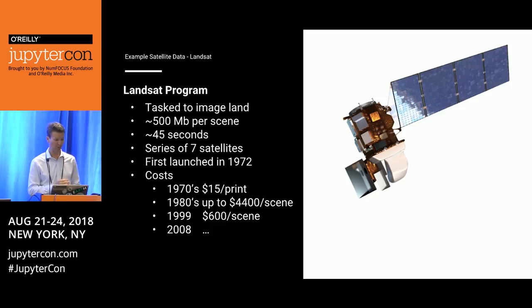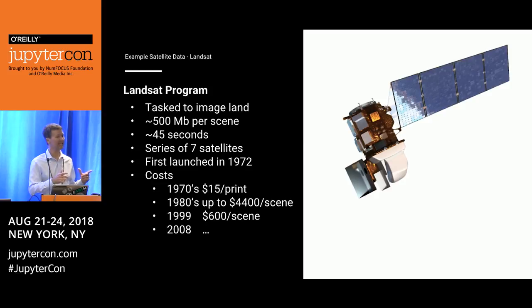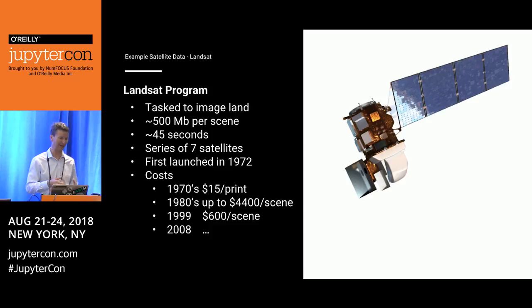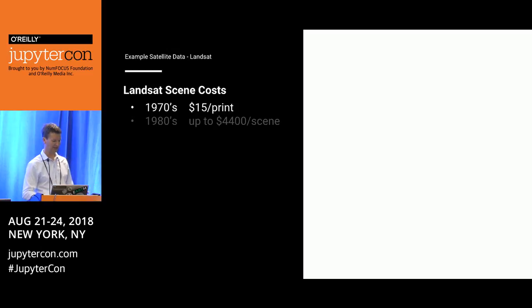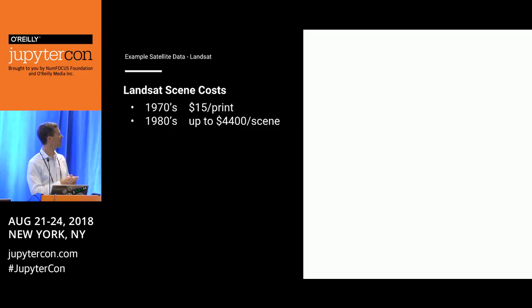A little more about the Landsat program. These satellites — there's been a series of seven of them, occasionally two flying at the same time. They take about 500 megabytes per scene over land, and that happens about every 45 seconds. You think back that this has been happening for 40 years, so it gives you a scale of the amount of data being generated. It started off at $15 for a hard copy, then moved to commercial sales at $4,000 per scene, so not a lot of use came out of that.